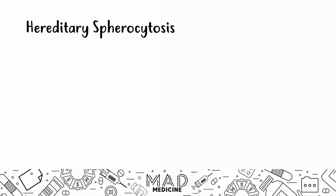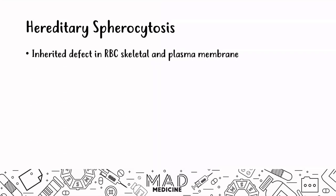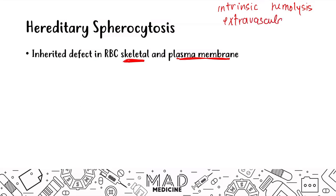Let's talk about hereditary spherocytosis. This is going to be a problem with the red blood cell membrane. As we'll see, this is an inherited defect in the red blood cell skeleton and the skeletal and plasma membranes. This is an issue happening intrinsic to the cell, so this is going to be a cause of intrinsic hemolysis. And most intrinsic hemolysis occurs outside of the vasculature, so this will also be an extravascular hemolysis.